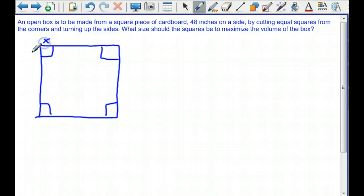I'll call this x and x on each corner. The question is, what size should these little squares be that we cut out so that the volume is maximized? If I'm starting out with 48 and I'm cutting away x on either end, then that means my new dimension is going to be 48 minus 2x.